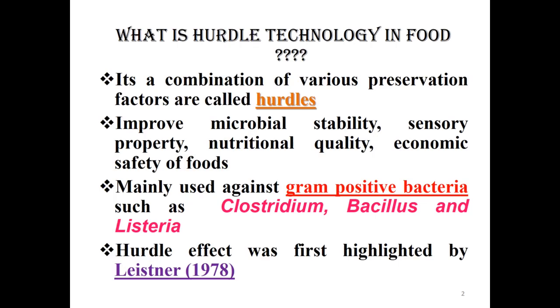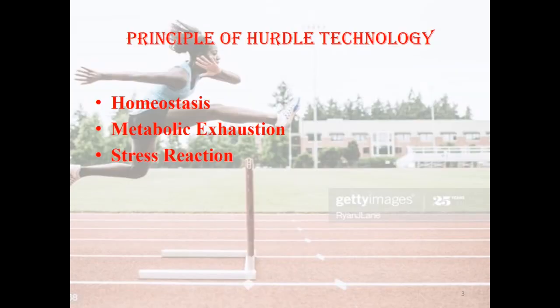Hurdle technology is mainly used against gram-positive bacteria such as Clostridium, Bacillus, and Listeria. The hurdle effect was first highlighted by Leistner in 1978.